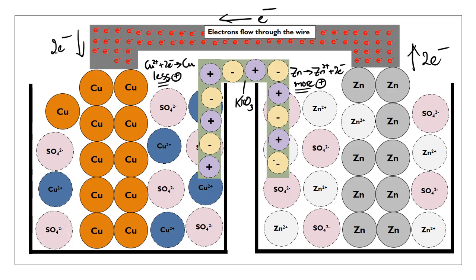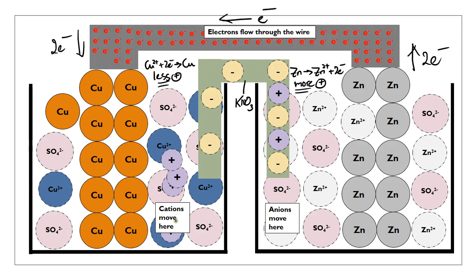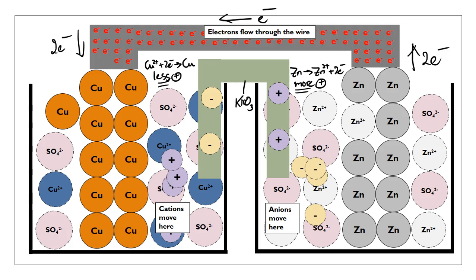This is where the salt bridge comes in. The copper side has become less positive because it just lost a 2+ ion, so the cations from the salt bridge go into that solution to compensate. On the zinc side, the anions from the salt bridge go into the solution to neutralize the extra cations that have just been produced. The salt bridge solves the problem of the two solutions not having a neutral charge, allowing the process to continue. Eventually you'll run out of the ions in the paper and need to re-soak it with more ions.